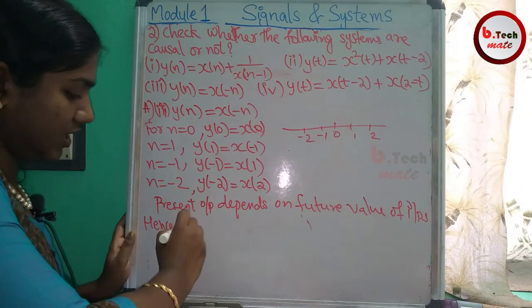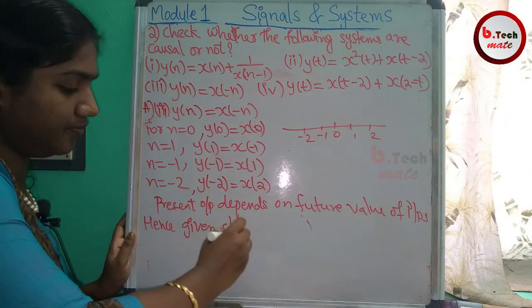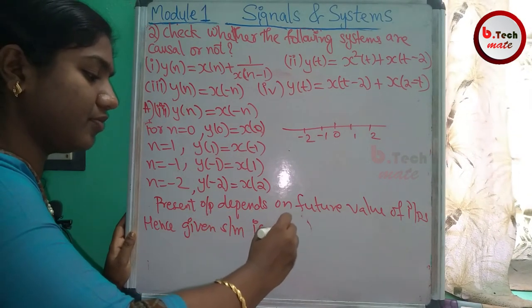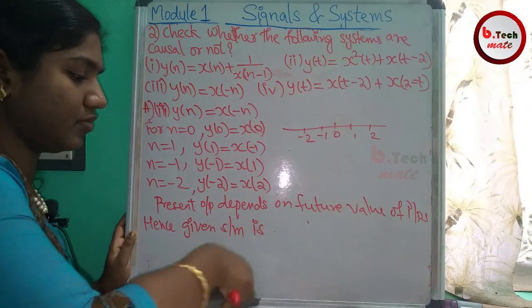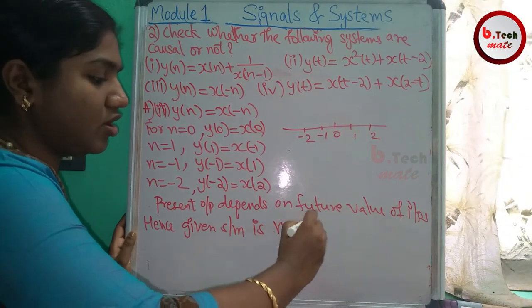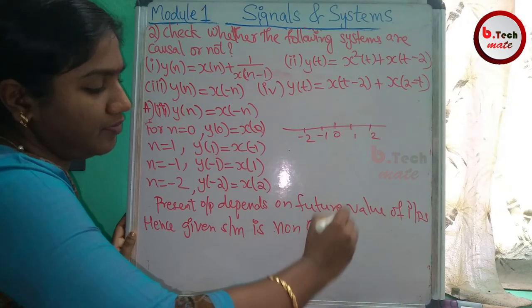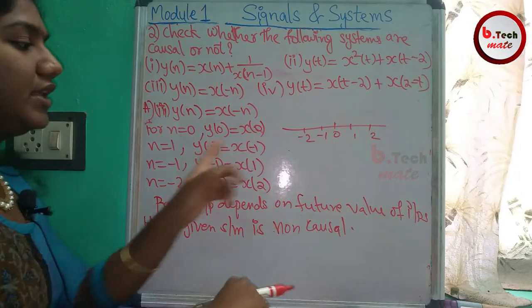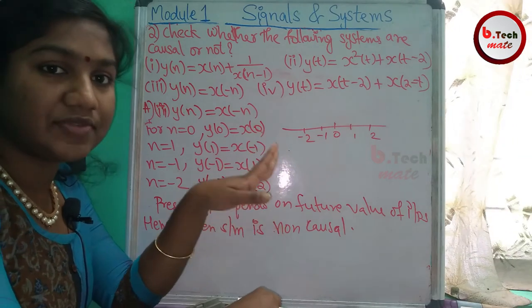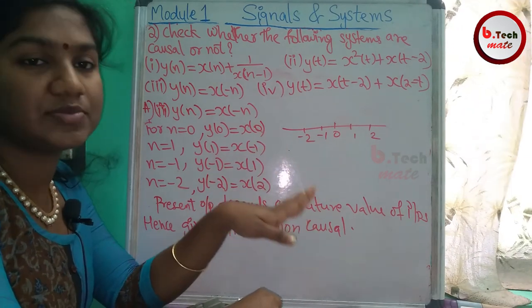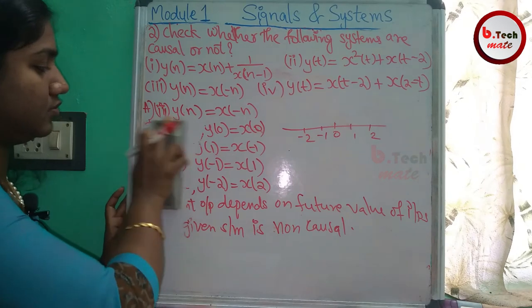Hence, the given system y[n] = x[-n] is non-causal, because the future value of inputs is involved. The system is non-causal.